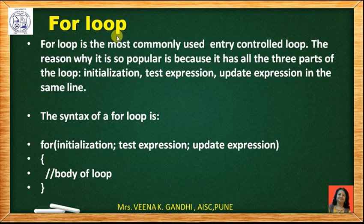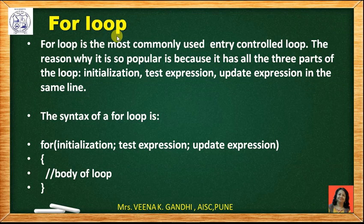Till now we have seen while loop and do-while loop — entry control and exit control. For both loops, we require an initialized expression, a test condition, and an update to the loop control variable. These three parts and components for any type of loop are combined in one statement in the for loop. That's why the for loop is the more popular loop, mostly used by every programmer.